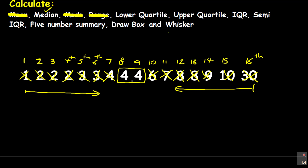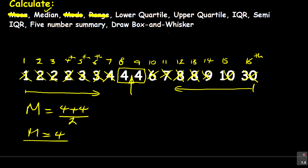To find the middle number, it will be in between the 8th and 8th position. What you're supposed to do — suppose there were different numbers — you're going to say the median M is equal to adding those two numbers and dividing by 2. In this case, it gives us 4. Another notation for the median is Q2, so Q2 is equal to 4 in this case. That's how you can find the median.